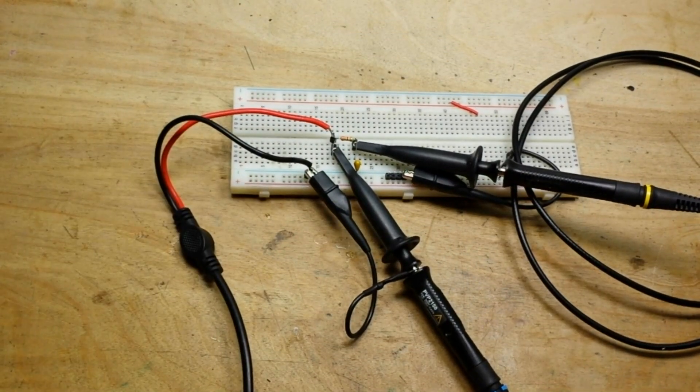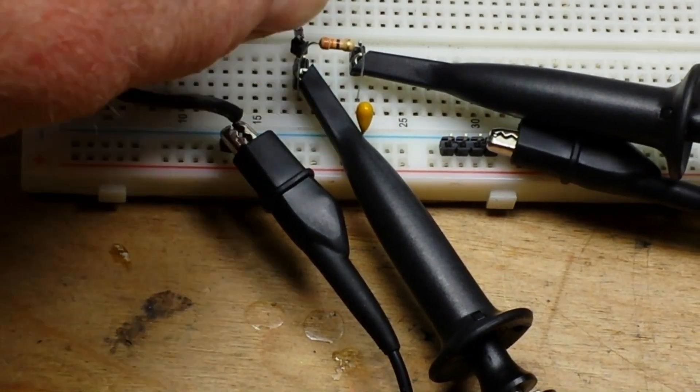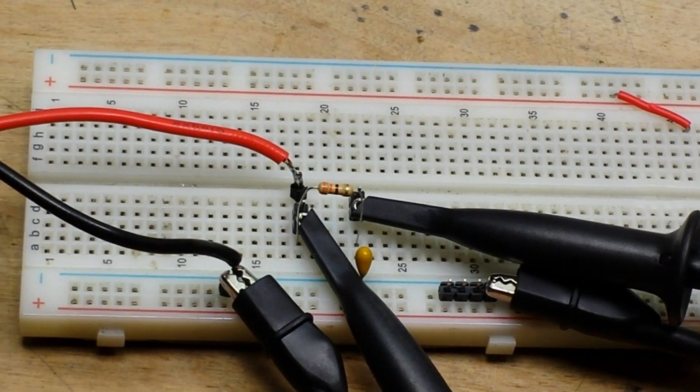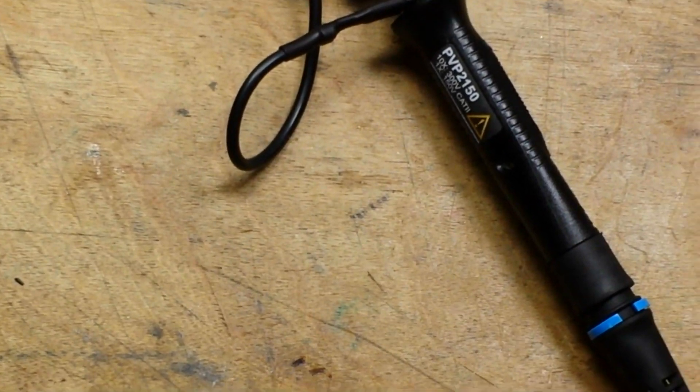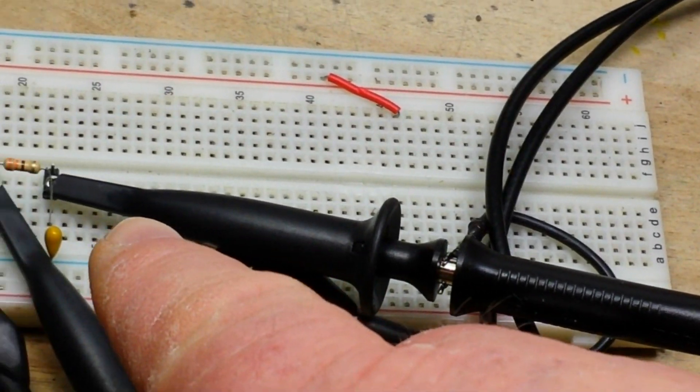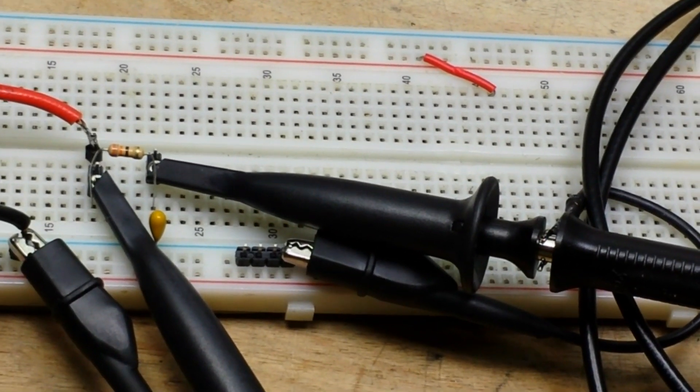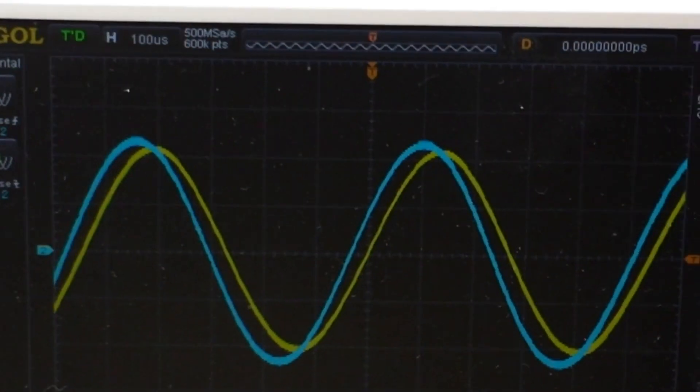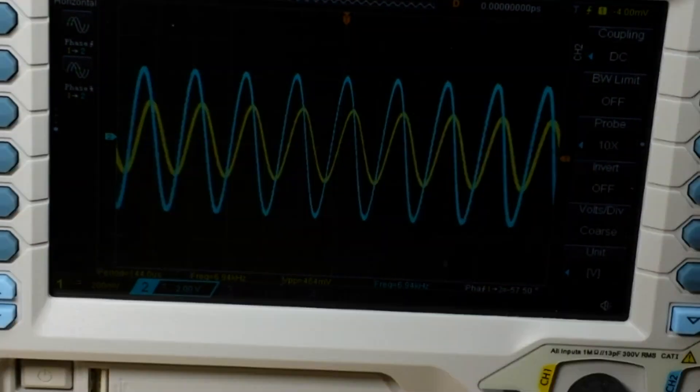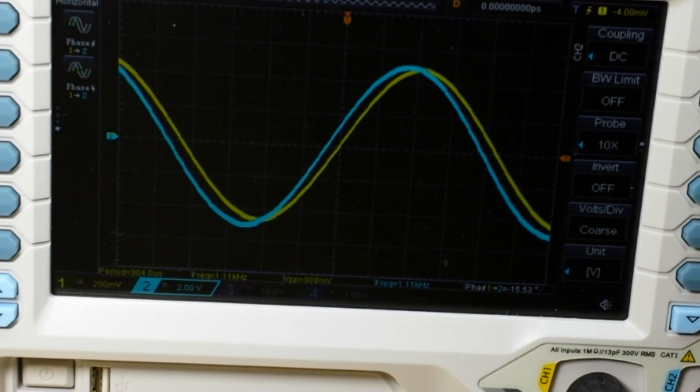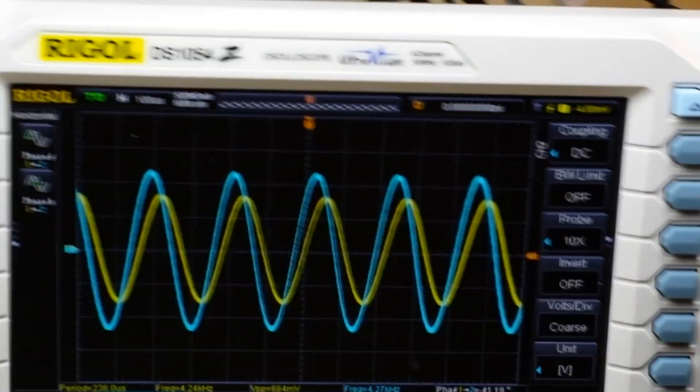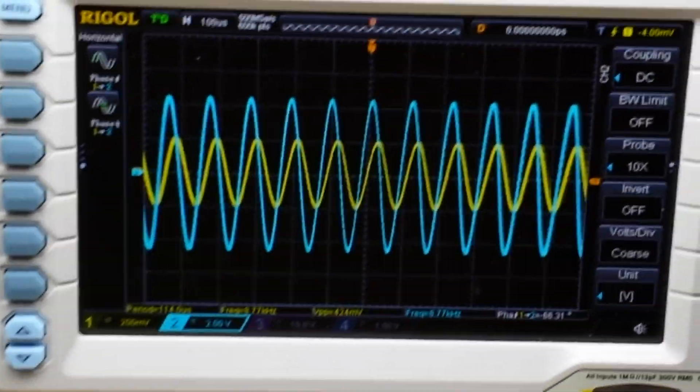So there is our low pass filter. The blue lead, the one here, is for our input and the yellow lead is on the output. If we take a look up here on the scope, let me turn out these lights so we can see a little better here. Oh, what I knocked loose, there we go. The yellow is our output, the blue is our input.